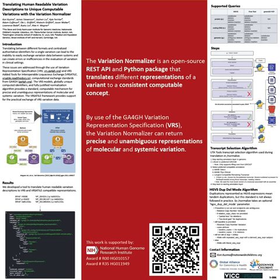Here you can see many different ways to represent the same variation concept, and the Variation Normalizer is able to return a single variation descriptor object with the same VRS variation. The Variation Normalizer supports HGVS, free text, and gnomAD VCF queries.